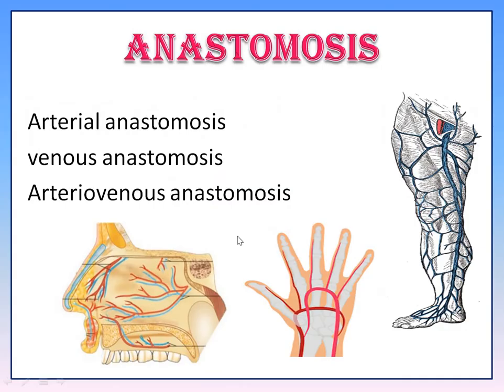There are three types of Anastomosis: Arterial Anastomosis, Venous Anastomosis, and Arterial Venous Anastomosis.